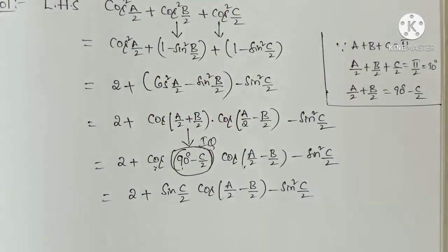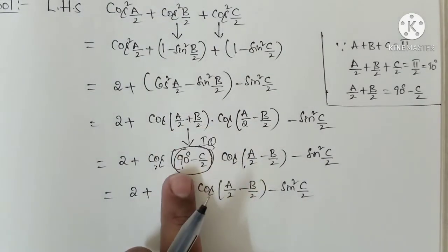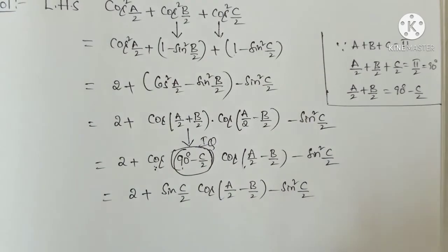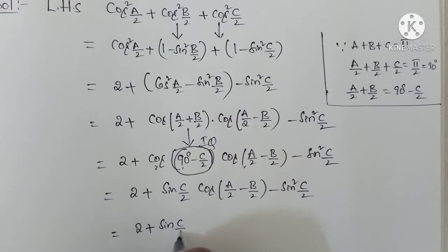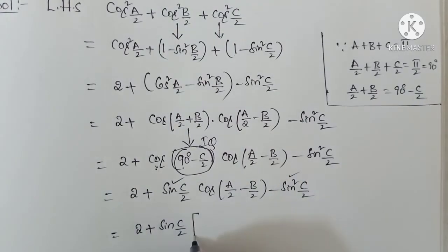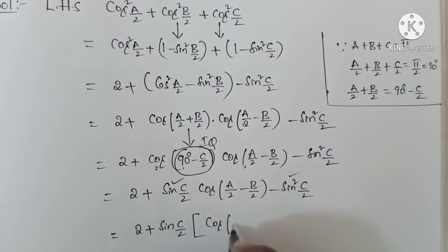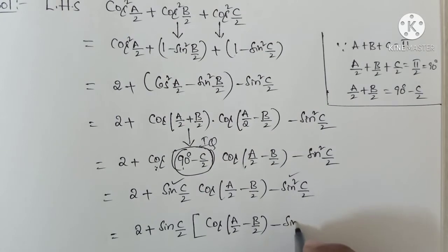Now there are 3 steps. First, a by 2 plus b by 2 equals 90 minus c by 2. Next step, take sin c by 2 as common from these two terms: 2 plus sin c by 2 into cos(a by 2 minus b by 2) minus sin c by 2.